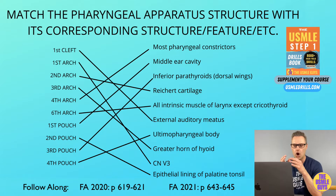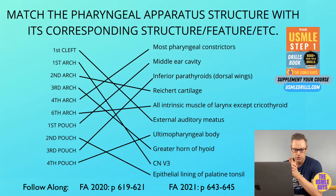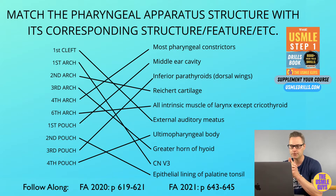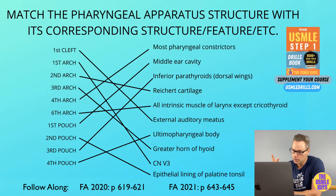The artery of the third pharyngeal arch becomes the common carotid artery and the proximal portion of the internal carotid artery. The cartilage component gives rise to the lower body and greater horn of the hyoid. The associated cranial nerve is CN IX. The muscle this arch gives rise to is the stylopharyngeus. From a sensory perspective, this provides taste and general sensation to the posterior one-third of the tongue. So arch 2 was the anterior two-thirds, arch 3 the posterior one-third.